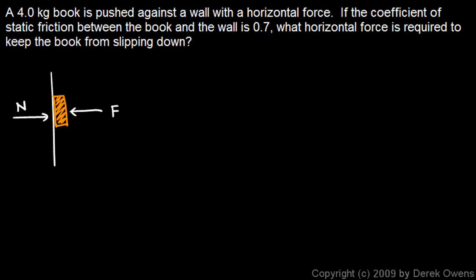We're told the coefficient of static friction between the book and the wall is 0.7, so that's our value for μ. So the force of friction is holding the book up - that's what keeps the book from sliding down against the downward pull of gravity, the book's weight, which is always m times g.